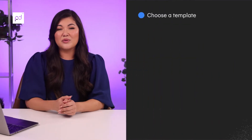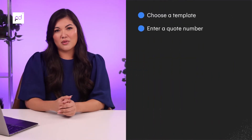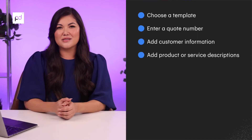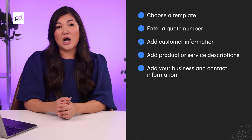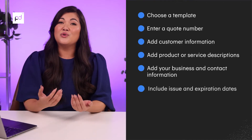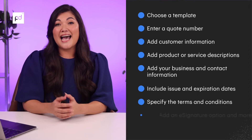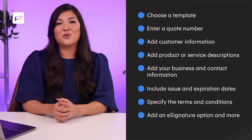There are many different types of quotes, such as a pricing quote, a service quote, or a sales quote, but ultimately all these documents can be organized into eight steps: choosing a template, entering a quote number, adding customer information, adding product or service descriptions, adding your business and contact information, including issue and expiration dates, specifying the terms and conditions, and adding an e-signature option to your quote. Let's go ahead and build one together.